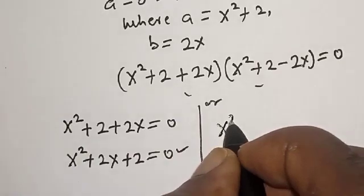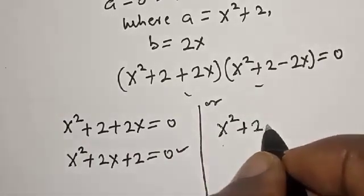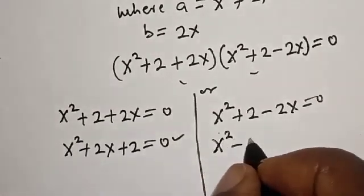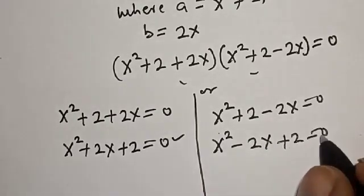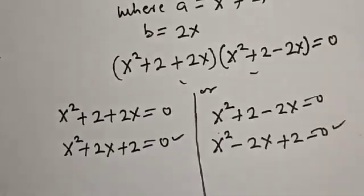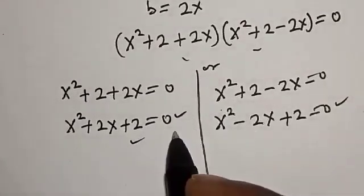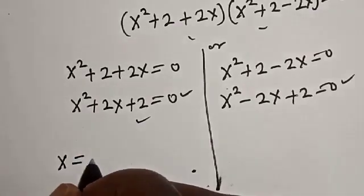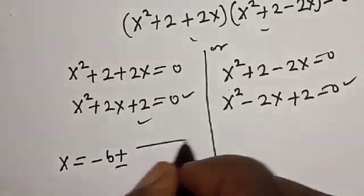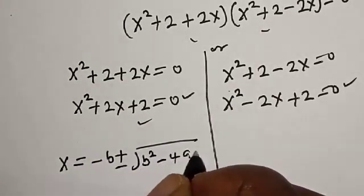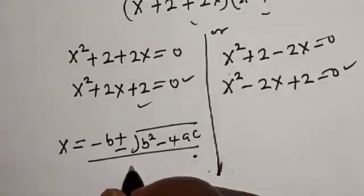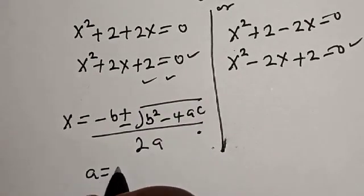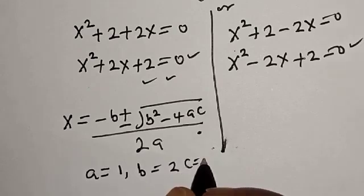This is also a quadratic equation. We can solve this using the quadratic general formula: x is equal to minus b plus or minus square root of b squared minus 4ac divided by 2a. From this equation, a is equal to 1, b is equal to 2, and c is equal to 2.